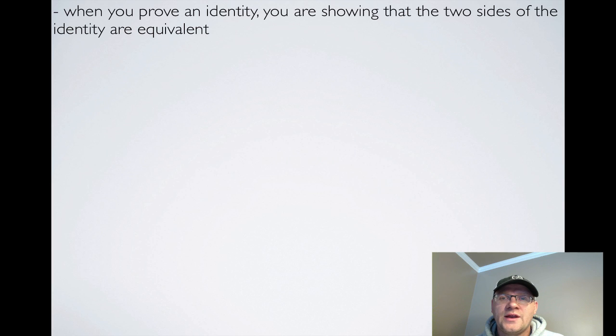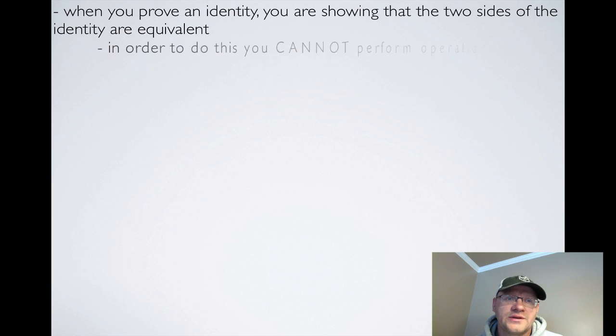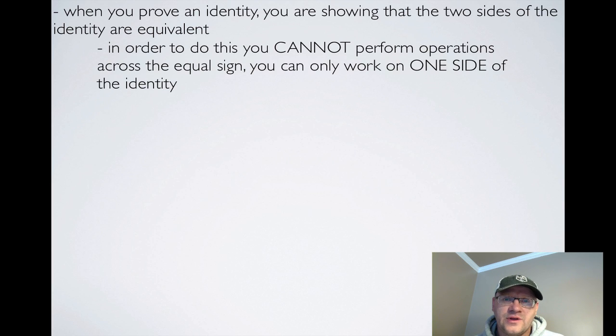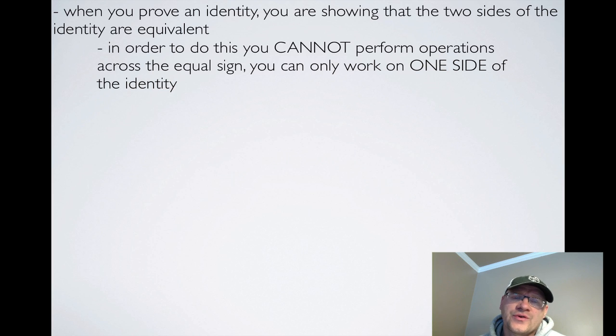When you prove an identity, you're showing that the two sides of the identity are equivalent. In order to do this, you cannot perform operations across the equal sign. You can only work on one side of the identity.